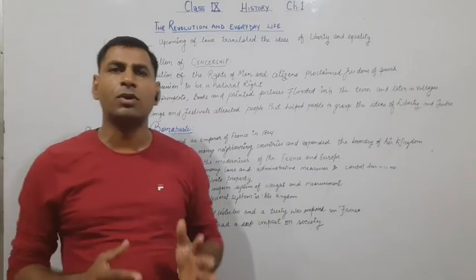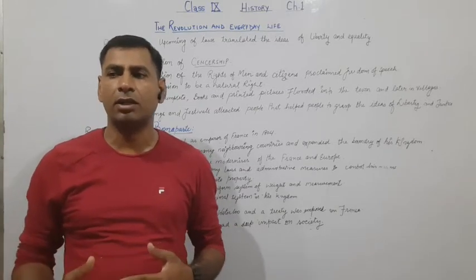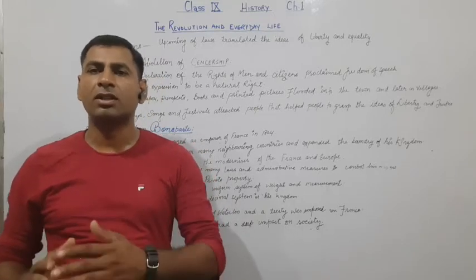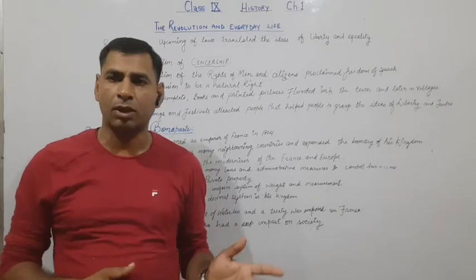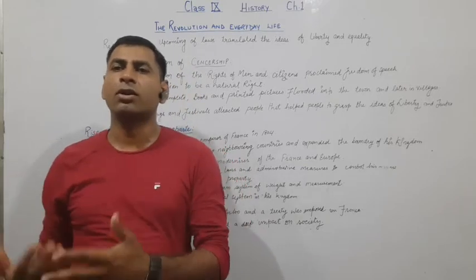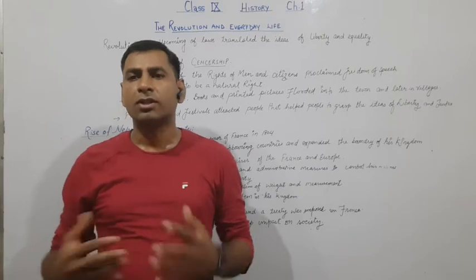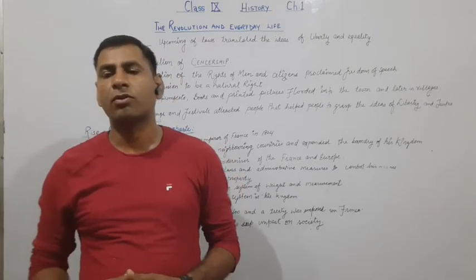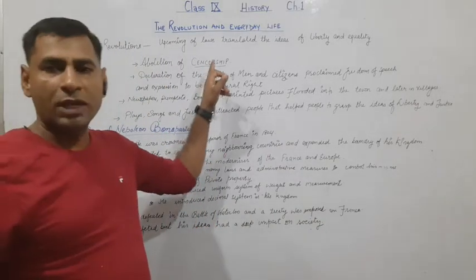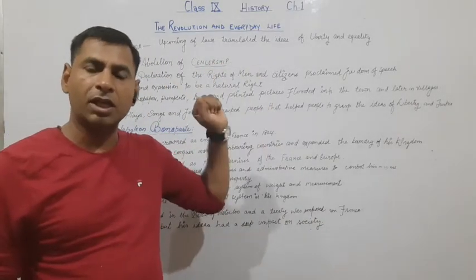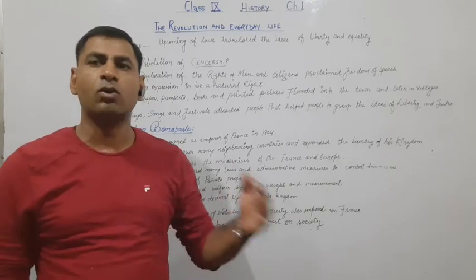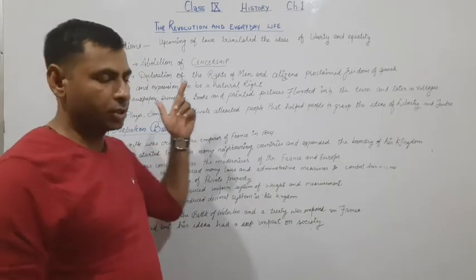So when the revolution happened, people got the freedom of liberty. They got the freedom and they interpreted it. Now they could write anything, whatever they wished to write. They started writing things according to their will. So the censorship was removed because of the revolution, and now people could print books and materials freely.